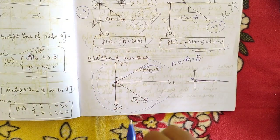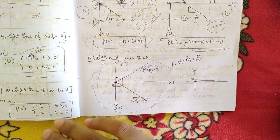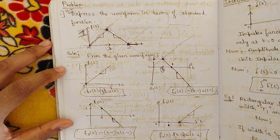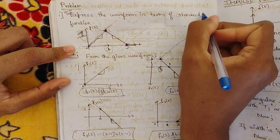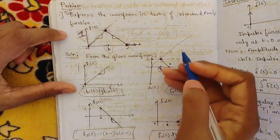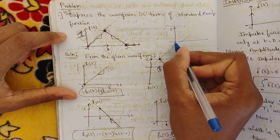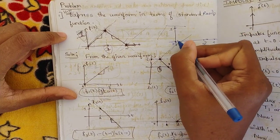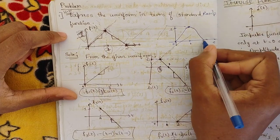Now let us see one example problem of the ramp function. The problem is to express the given waveform in terms of standard ramp functions. The graph shows: from 0 to 1, a ramp goes up to amplitude 1; from 1 to 2, the ramp comes down; and from 2 to 3, it is zero. The slope from 0 to 1 is +1, and from 1 to 2 is −1.